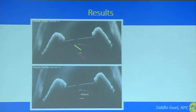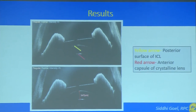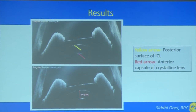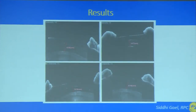This is the representative image acquired on the modified posterior segment OCT. The yellow arrow represents the posterior surface of the ICL, the red arrow is the anterior capsule of the crystalline lens, and the distance between these two represents the ICL vault. These are similar images acquired in the other patients showing how we calculated the vaulting.